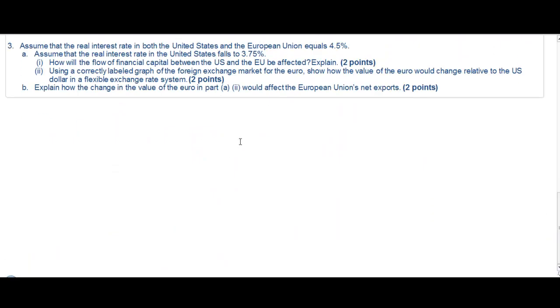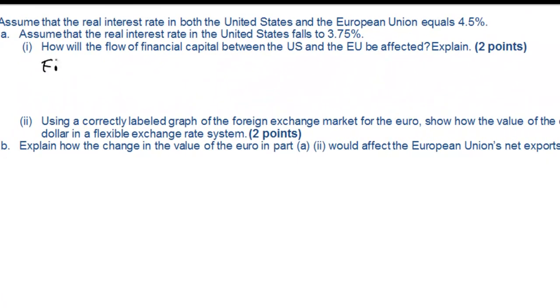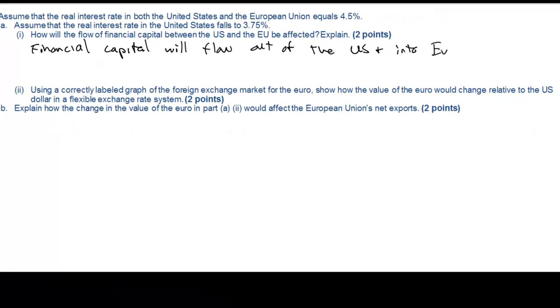Next we're going to move on to number 3. Number 3 asks us to assume that the real interest rates in the US and Europe begin at 4.5% but then the US interest rate falls to 3.75%. How will this affect the financial flow between these countries? Due to lower interest rates in the United States, capital is going to flow out of the US and into Europe since European banks are now offering higher interest rates.